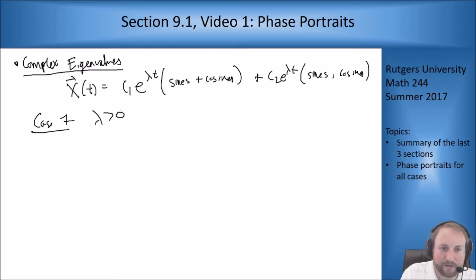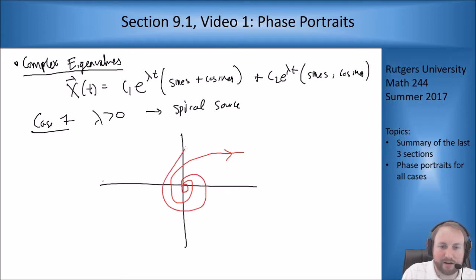Case one: if lambda is positive, then I get a spiral source. Because everything is going to flow away from the center. I get things that are spiraling out of the center. That's just your general picture. To get more specific, you have a specific solution you want to start plugging in.